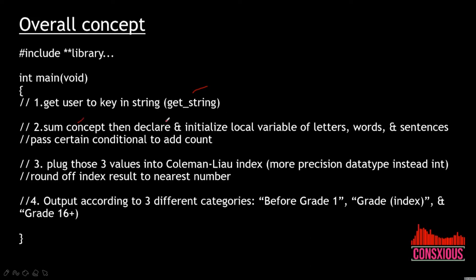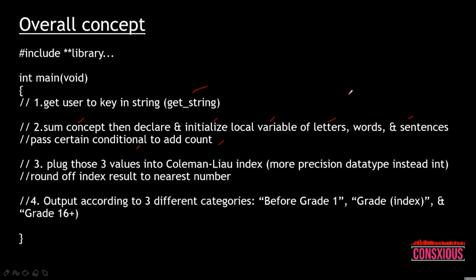Secondly, we use the sum concept to declare and initialize the local variables of letters, words, and sentences. We also need certain conditions to add the count. Third, once we get the letters, words, and sentences, we plug them into the formula — the index — so we will use a float data type instead of integer.